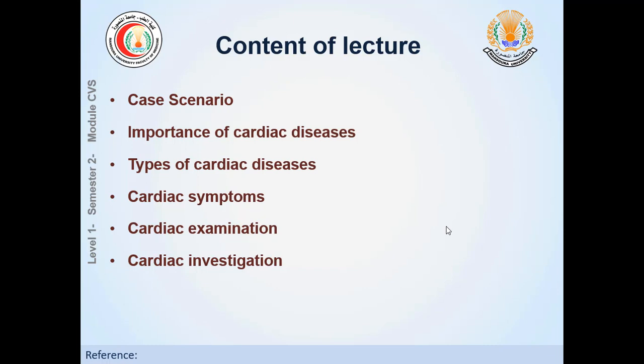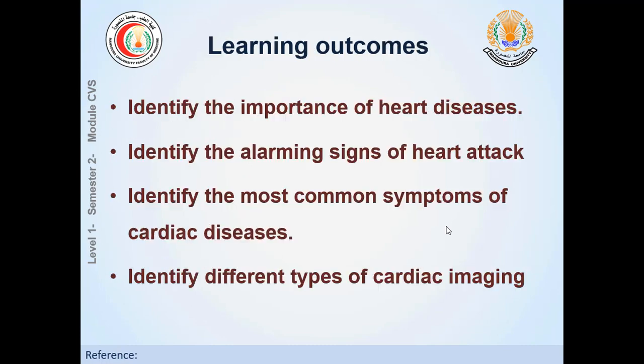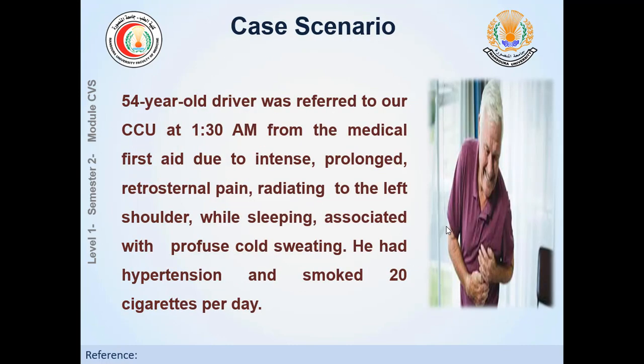Here is an example of a common case we see every day in our clinic. This is a male, 54 years old, a driver, referred to our coronary care unit at 1:30 a.m. because of chest pain. The pain was retrosternal, radiating to his left shoulder, occurred during sleep, and was associated with cold sweating. This patient had two risk factors: he was hypertensive and a heavy smoker.